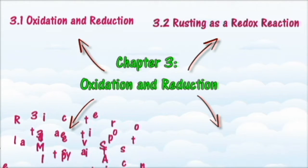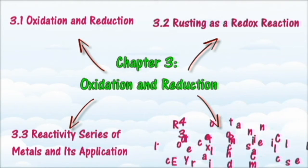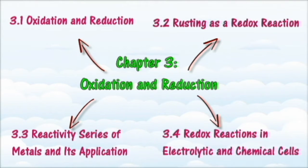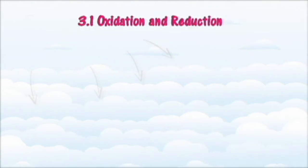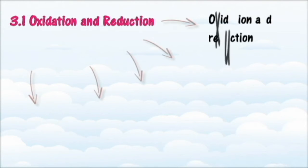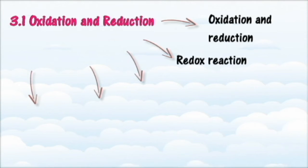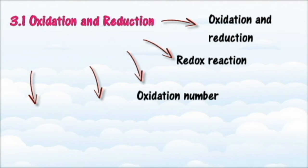There are four main sections in this chapter: 3.1 Oxidation and Reduction, 3.2 Rusting as a Redox Reaction, 3.3 Reactivity Series of Metals and its Application, and 3.4 Redox Reactions in Electrolytic and Chemical Cells. In Section 3.1 we will learn about oxidation and reduction. At the end of this section you should be able to state what oxidation is, state what reduction is, explain what a redox reaction is, state what an oxidizing agent is, and state what a reducing agent is.